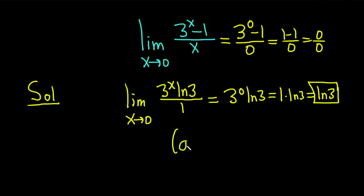In general, if you have a to the x and you take the derivative with respect to x, that's going to be a to the x times the natural log of a.